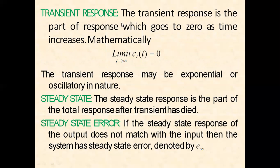Transient response. The transient response is the part of the response which goes to zero as time increases. Mathematically, when t tends to infinity, c(t) equals zero. This is the transient response — when time goes to infinity, the response goes to zero. The transient response may be exponential or oscillatory in nature.